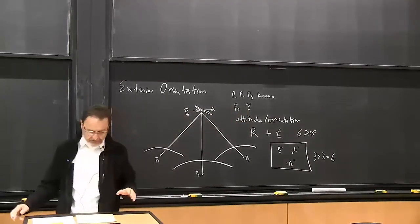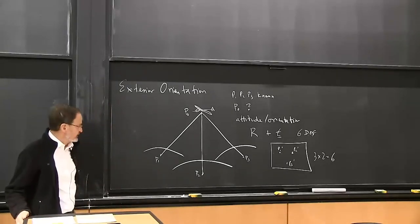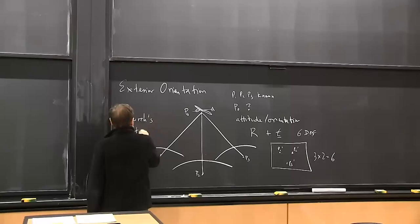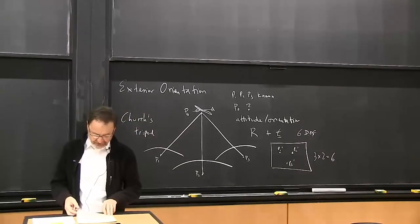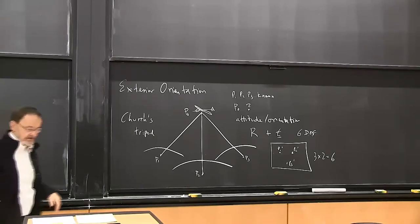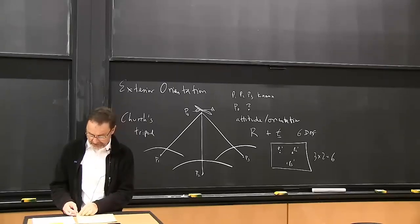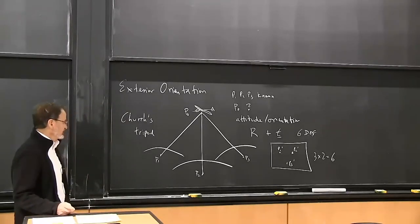So with three points we should have enough constraints, and that naive argument is actually correct — we only need three. This problem was solved, I believe by Church, who wrote it up in a textbook in the 1950s. It's an old photogrammetric problem. Machine vision people didn't read that and reinvented photogrammetry, doing a rather poor job — coming up with things like projective geometry. We go back to the roots, which is photogrammetry.